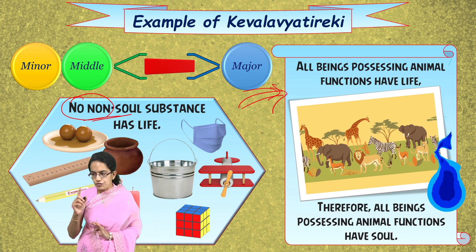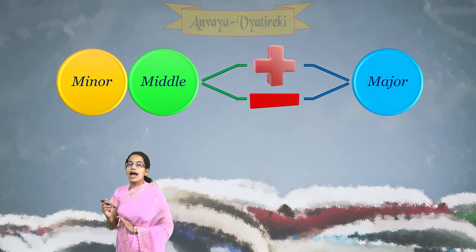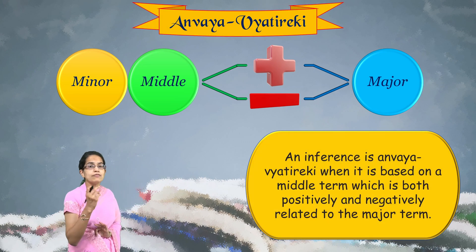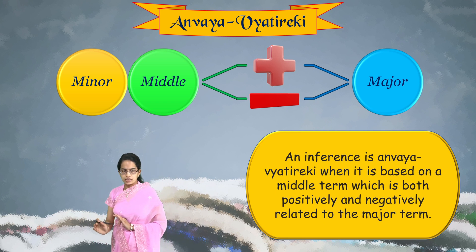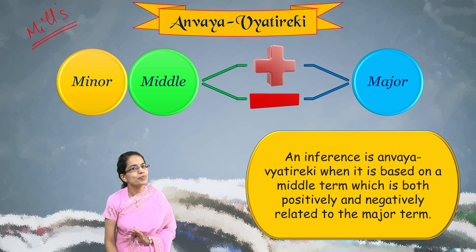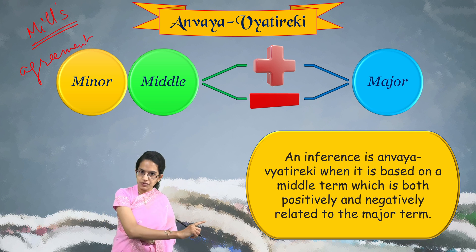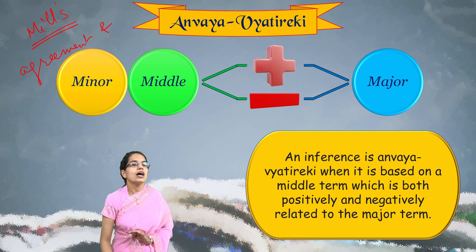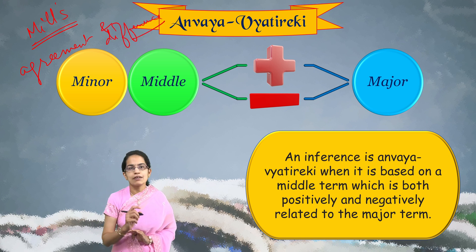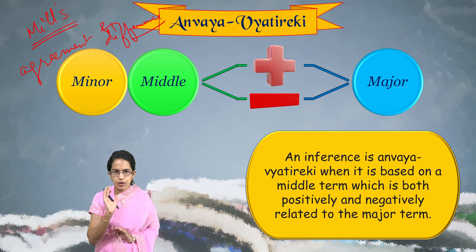The next type is Anvaya Vyatireki, where Anvaya is positive and Vyatireki is negative in Sanskrit terminology, so both positive and negative relations co-exist. Equating it to Mill's method, this corresponds to the joint method of agreement and difference — since Kevalya Anvaya was method of agreement and Kevalya Vyatireki was method of difference. Here both positive and negative relations exist between the Hetu and the Sadhya.